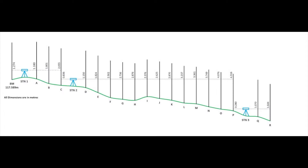Here we have our first example. We're going to calculate the level, or the reduced level, of each of the points — A, B, C, D, E, F, G, H, I, J, K, L, M, N, O, P, Q and R — by the rise and fall method.